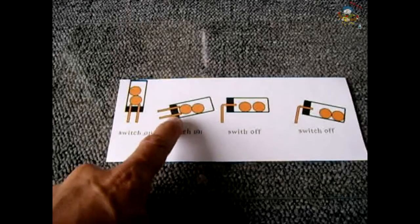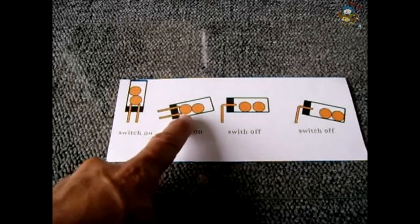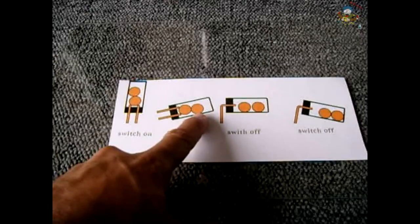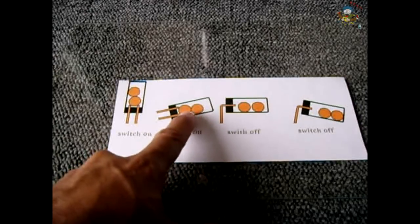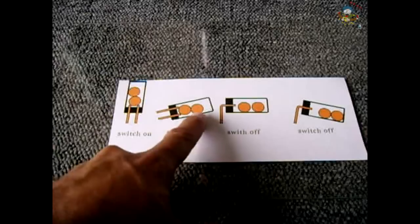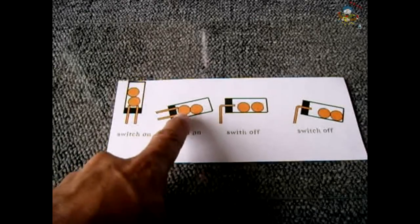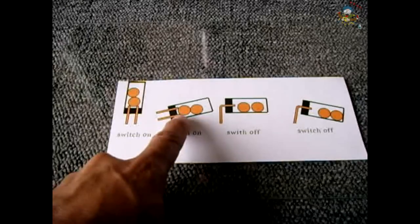When the canister is at an angle to a certain degree it still has continuity because of the weight of the second ball still pushing on the first. That's the purpose of the second ball, to ensure that the first ball has enough weight behind it to make good contact with the two pins.